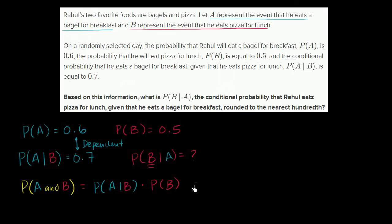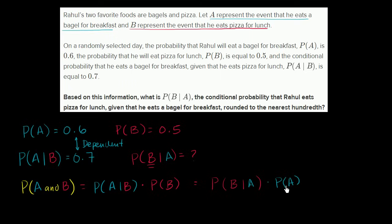And that would also be equal to — since A and B is symmetric — the probability of B given A times the probability of A. What's the probability that A happened, and given A happened, what's the probability of B? You multiply those together and you get the probability that both happened.